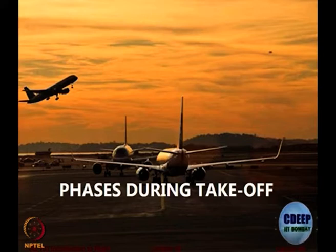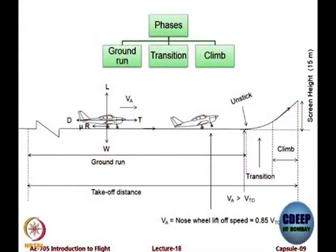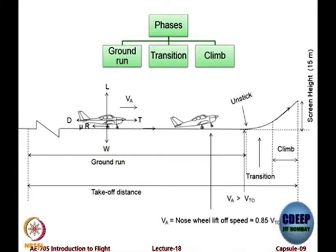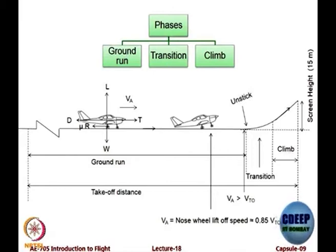There are some phases during takeoff — it does not take place in one shot. There are three basic phases: the ground run, which is from the time you start from a stationary position to the point where you leave the ground; then a transition phase when you clear the obstacle height or screen height; and then a climb phase.